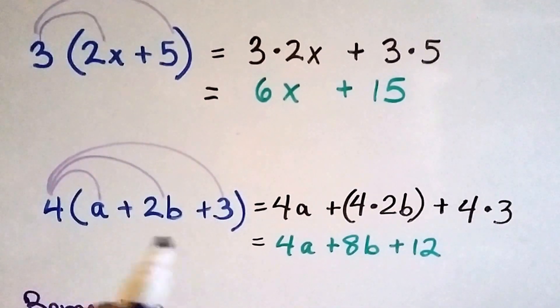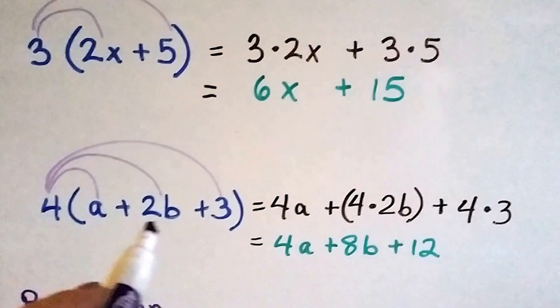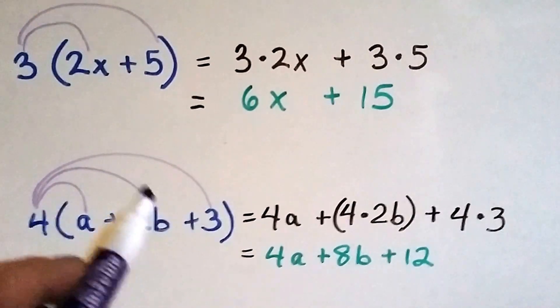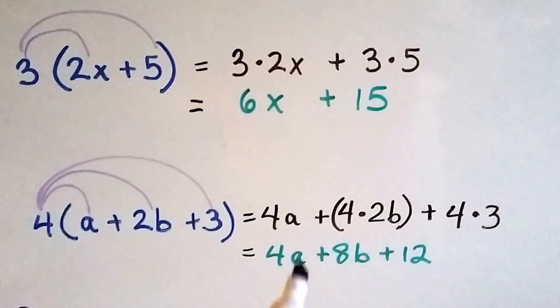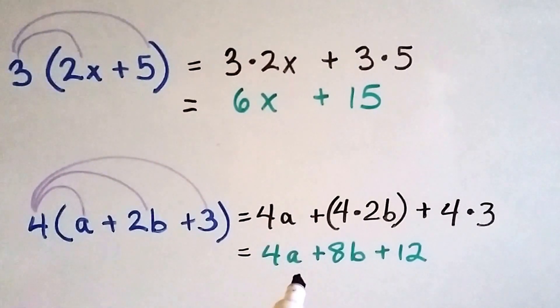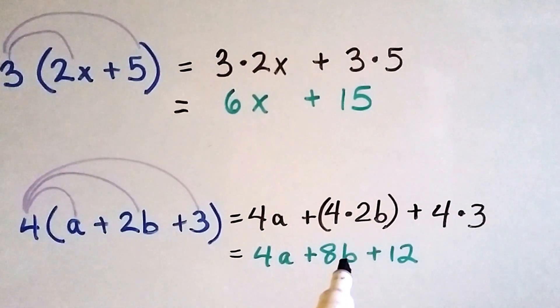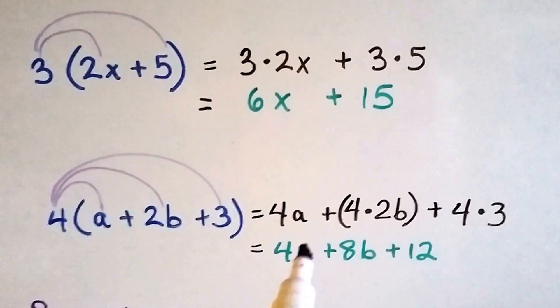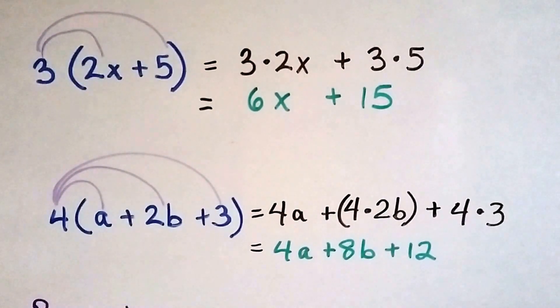And when we've got numbers and variables inside of a big parentheses, we distribute 4 times a plus 4 times 2b plus 4 times 3. And we just drop down the 4a. 4 times 2b is 8b and 4 times 3 is 12. So our equivalent expression to this one is 4a plus 8b plus 12.